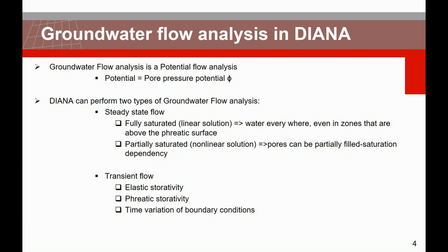In Diana, you need to perform a groundwater flow analysis, or potential flow analysis, where the potential is the pore pressure potential phi. Diana supports two types: a steady state groundwater flow analysis considering a fully saturated state (the linear solution, where water exists everywhere even above the phreatic surface), and a partially saturated or nonlinear solution where pores can be partially filled with saturation dependency. The second main type is transient groundwater flow, but today we stay in the steady state case.